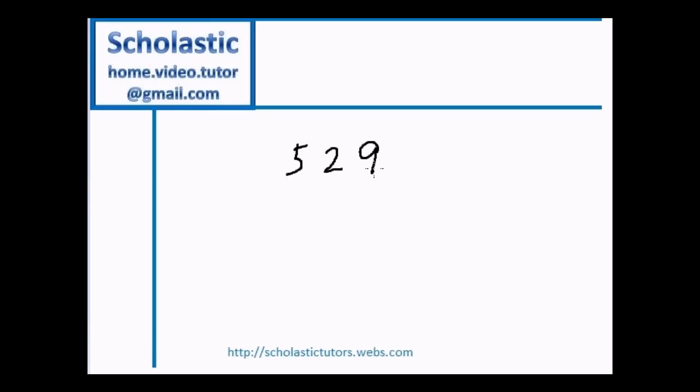To find the square root of this number, first what we should do is count from behind two numbers and put a comma here. Basically we separate this into two parts: 5 and 29.